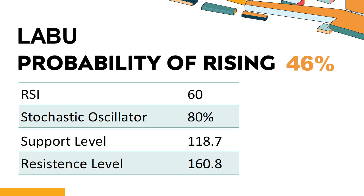The current stochastic oscillator of LABU is 80%. When the stochastic oscillator rises above the 80 level, it is usually considered overbought, indicating that the stock may be due for a price pullback. An overbought condition occurs when a stock's price rises too fast and too high in a short period of time and can be a sign that buying pressure has exhausted.